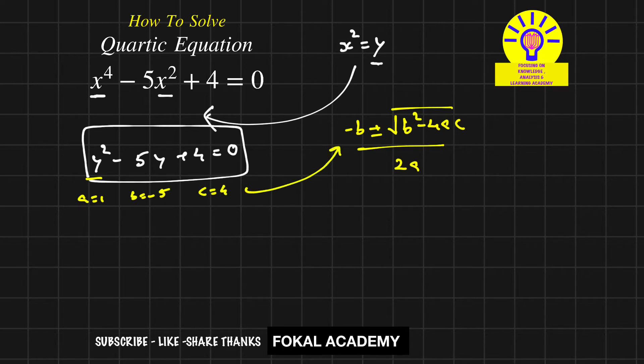Substituting these values to get y: y = (5 ± √((-5)^2 - 4(1)(4)))/(2(1)) = (5 ± √(25 - 16))/2.